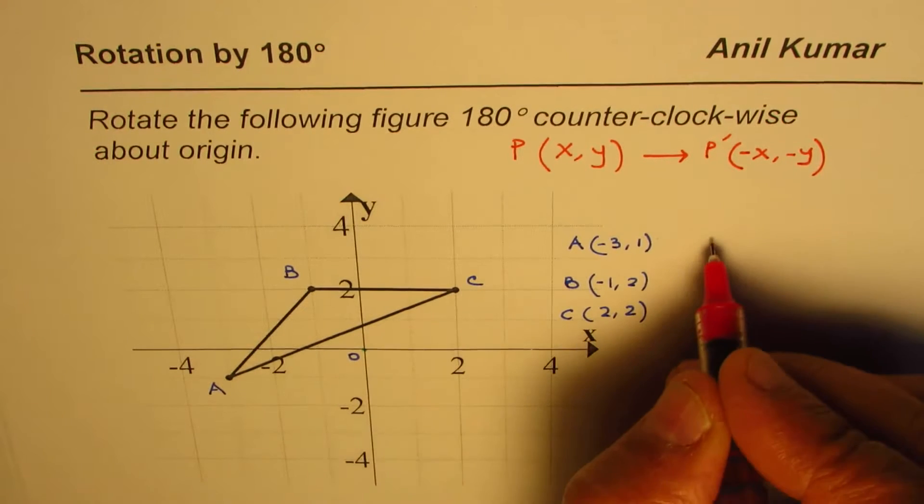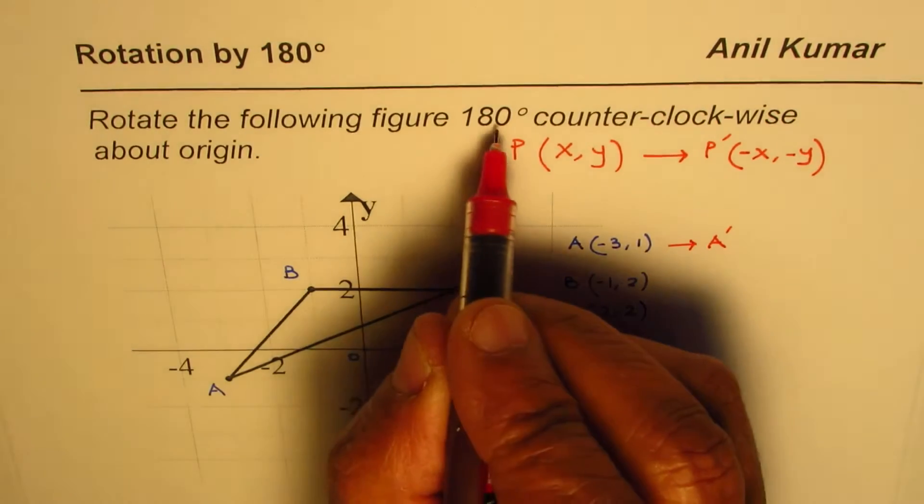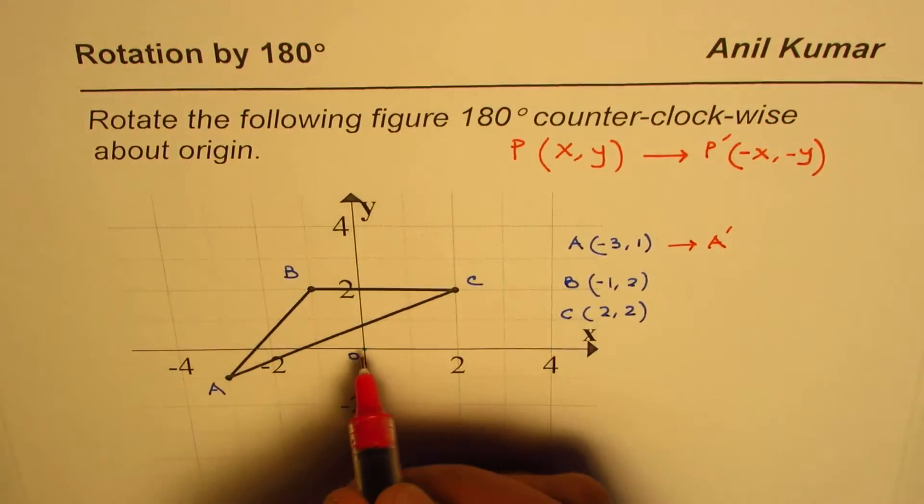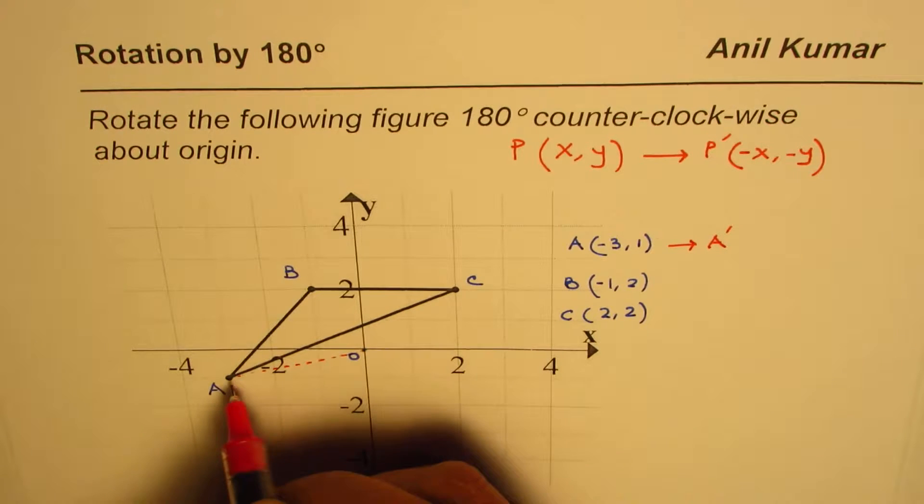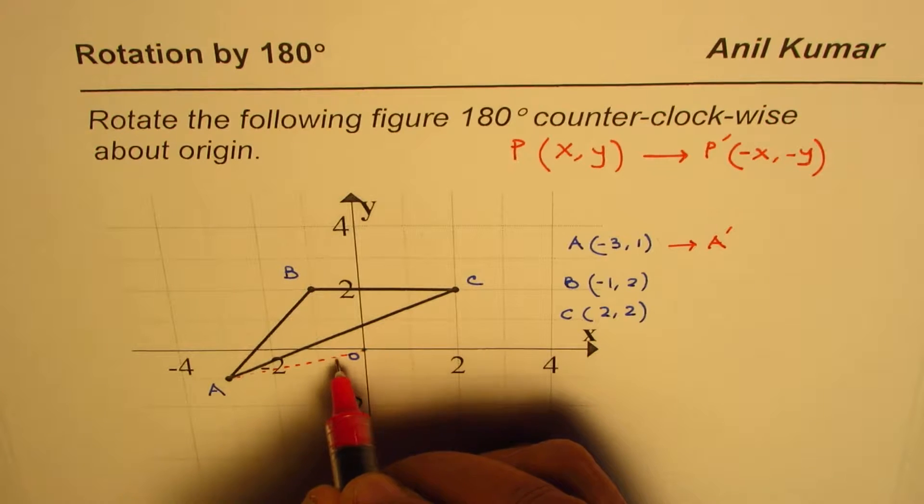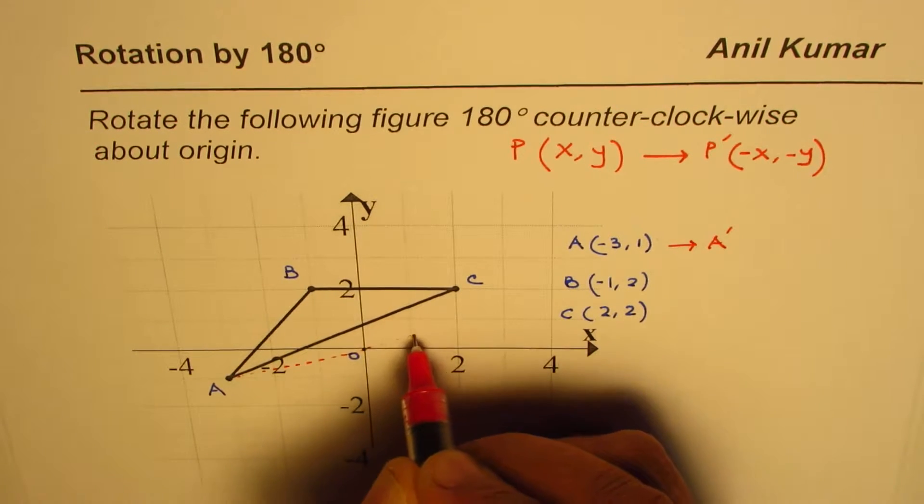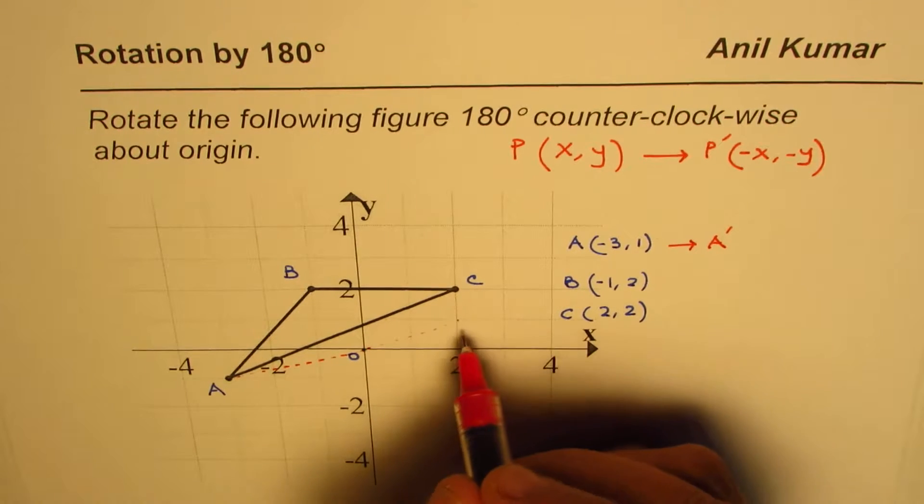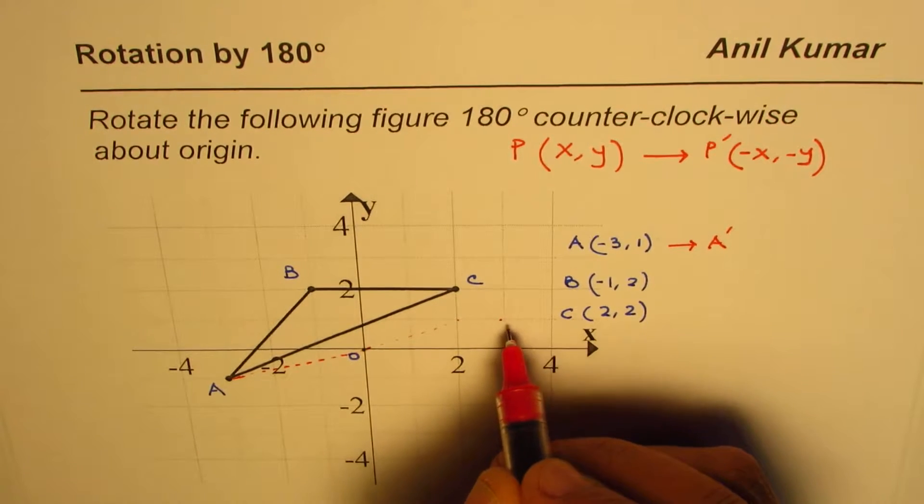Let's take an example. So if A is our point, then A' will be the image point after 180 degrees counterclockwise rotation. That means from here if you think about it, let's join this. If I do counterclockwise, then we are going in this direction, 180 degrees, so this point will land up there.